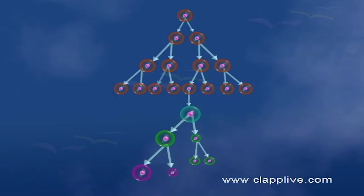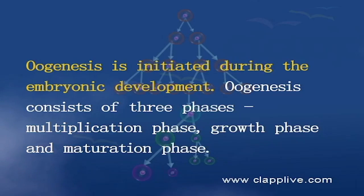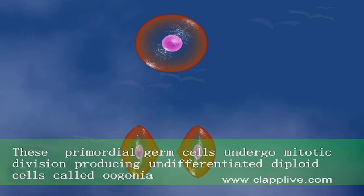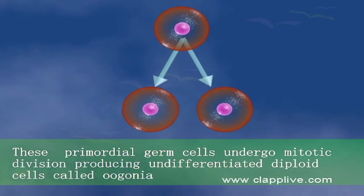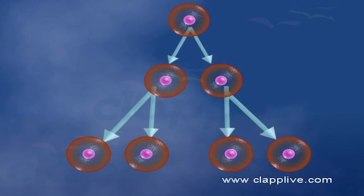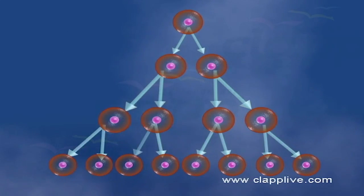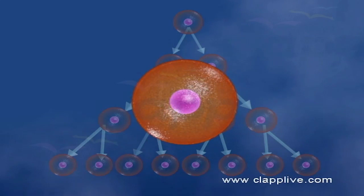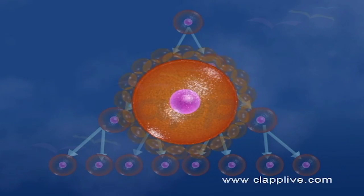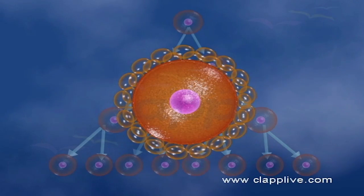The process of formation of a mature female gamete, the ovum, is called oogenesis. This process is initiated during the embryonic development stage and consists of three phases: multiplication phase, growth phase, and maturation phase. During the multiplication phase, cells of the germinal epithelium of the fetal ovary undergo mitotic division, producing undifferentiated diploid cells called oogonia or gamete mother cells. Some of these cells grow and become the primary oocyte, which is diploid. Meiosis begins in the primary oocytes soon after their formation, but the division gets arrested and the oocyte remains in the meiotic prophase one stage. Each primary oocyte then gets surrounded by a layer of granulosa cells derived from the germinal epithelium, forming the primary follicle.